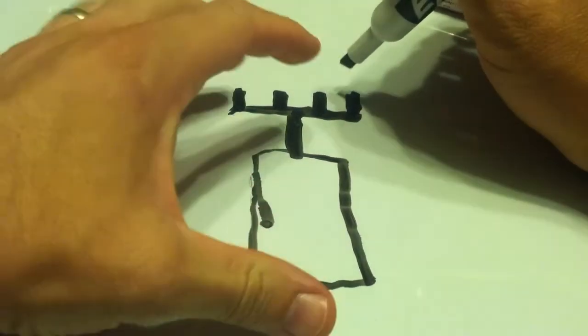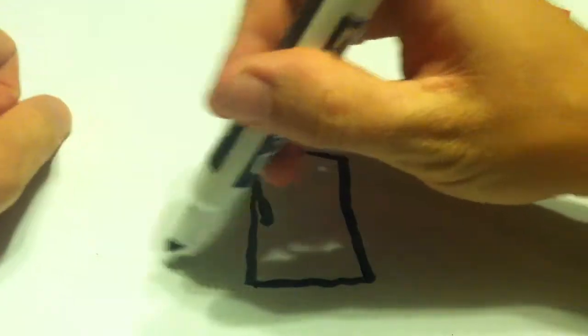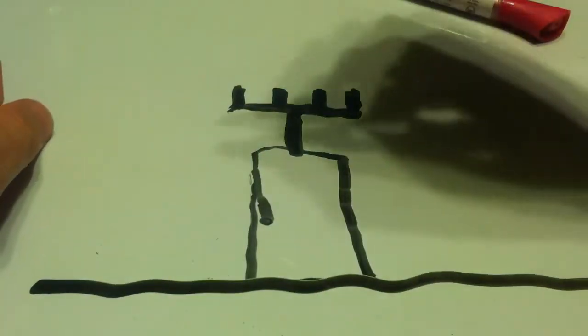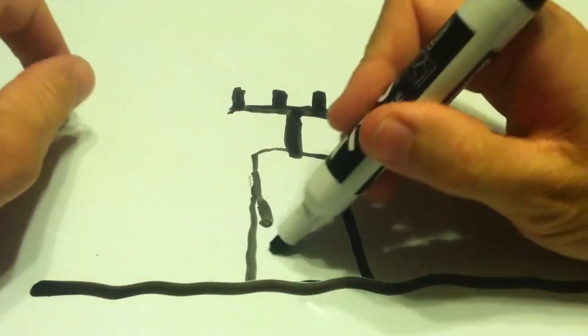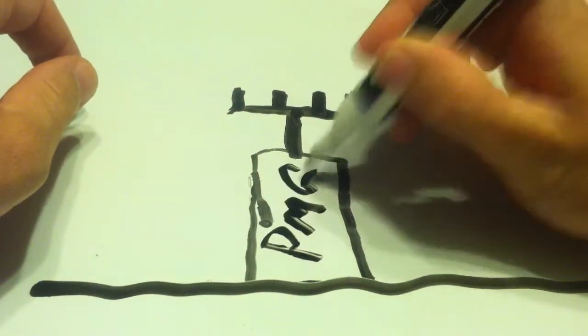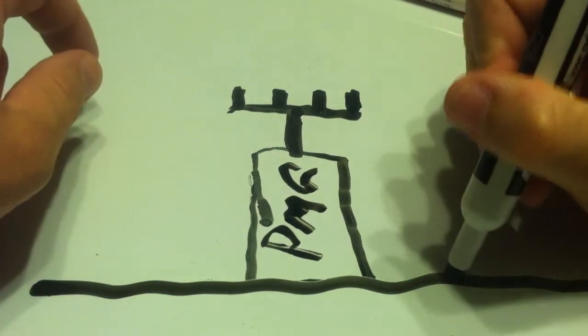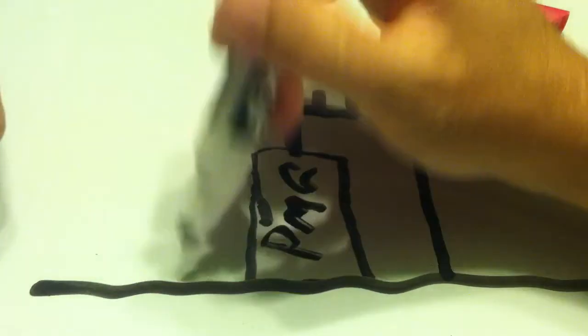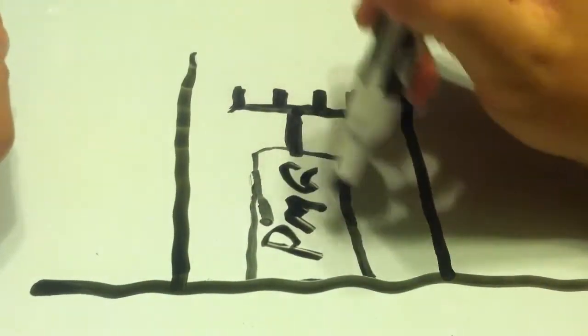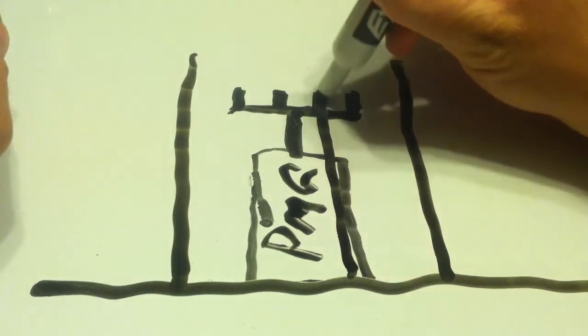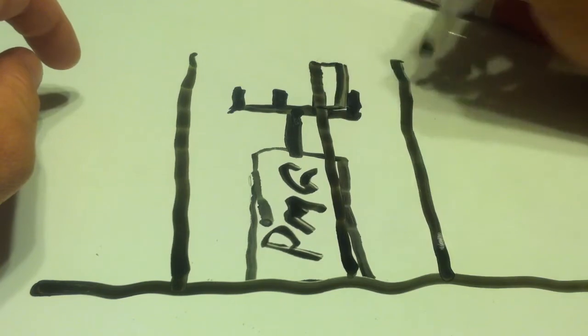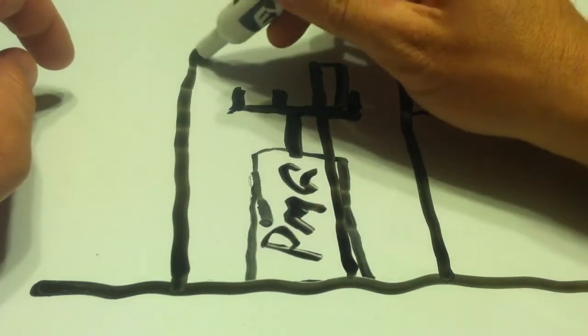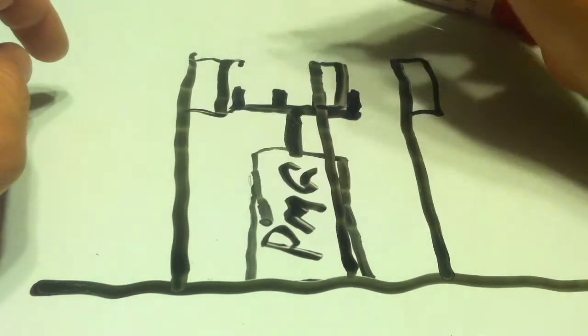Now what you're going to do is this is going to be mounted to a base. Now here's our base. What we're going to do now is we've got our PMG. I'm going to write on here PMG, forgive me for writing sideways. And then we're going to have three posts coming up. I'm going to offset this one. Now these three posts are going to house magnets, three of them.